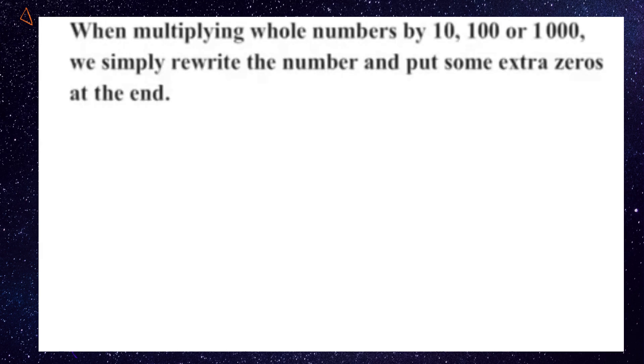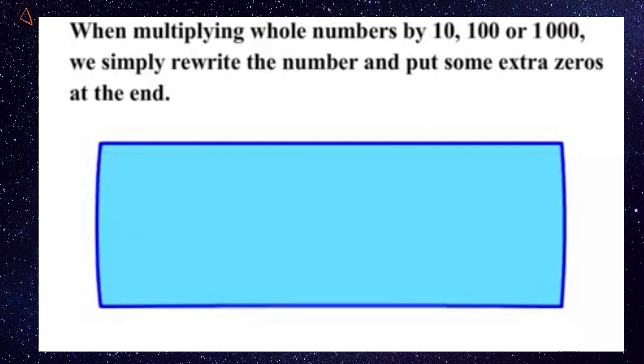Now this lesson we're looking at multiplying whole numbers by 10, 100 and 1000. Very easy concept here. The rule is, when multiplying whole numbers by 10, 100 or 1000, we simply rewrite the number and put some extra zeros at the end. That seems to be pretty easy. This is the rule.